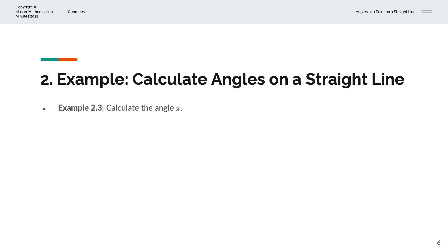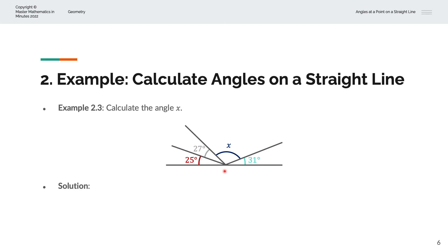In the third example, we're asked to calculate the angle x. We have four lines and four angles. The total angle on a straight line sums to 180 degrees. So x is equal to 180 minus 25 minus 27 minus 31, which simplifies to x equals 97 degrees.